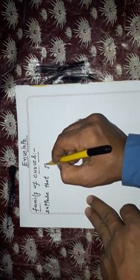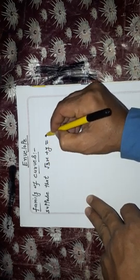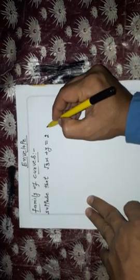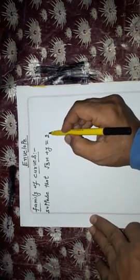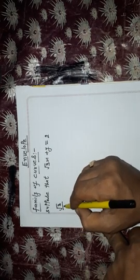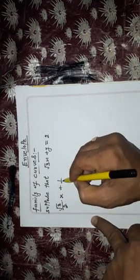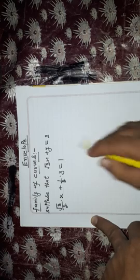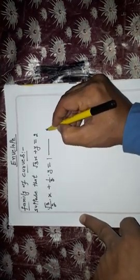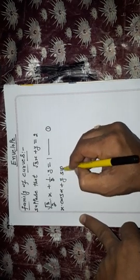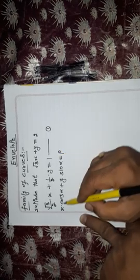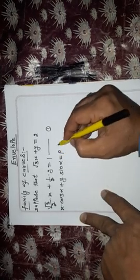Suppose that √3·x + y = 2. This is the equation of a straight line. This equation can be written as (√3/2)·x + (1/2)·y = 1. We know that x·cos α + y·sin α = p is the equation of a straight line in perpendicular form.